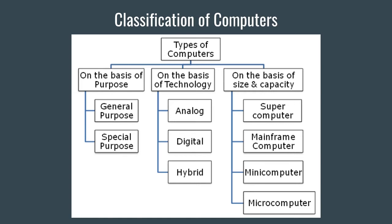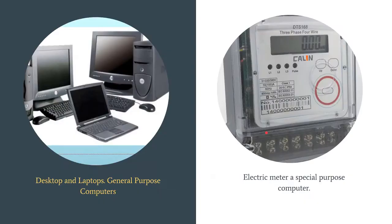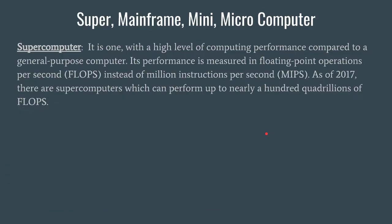The size of supercomputers is huge — they will not fit on a desktop table and require a huge space. The performance of supercomputers is measured in floating-point operations per second (FLOPS), while mainframe performance is measured in millions of instructions per second (MIPS).